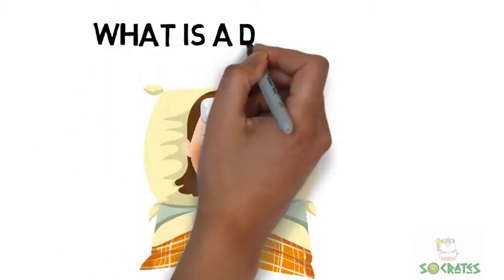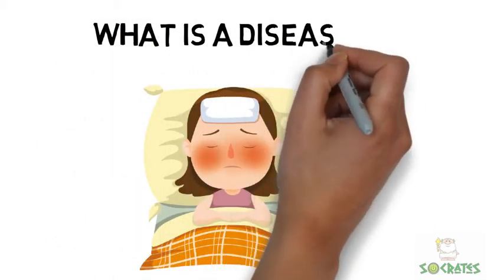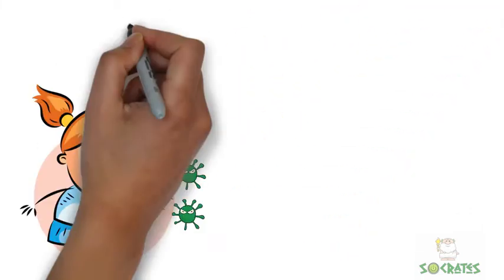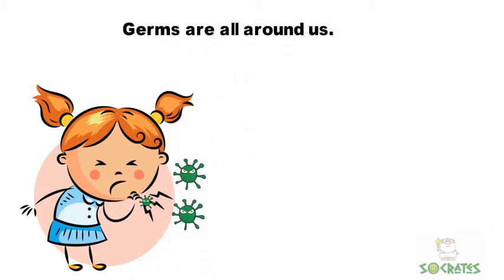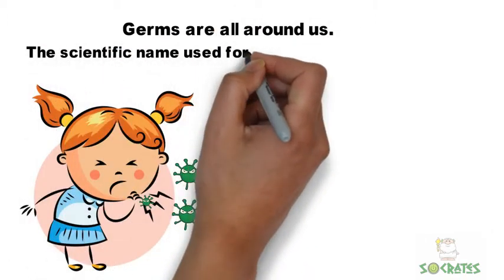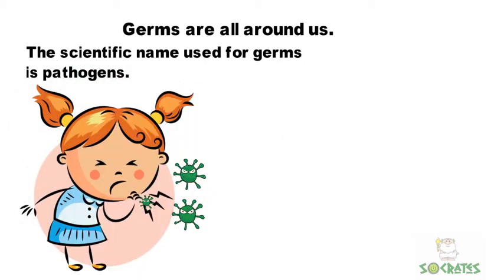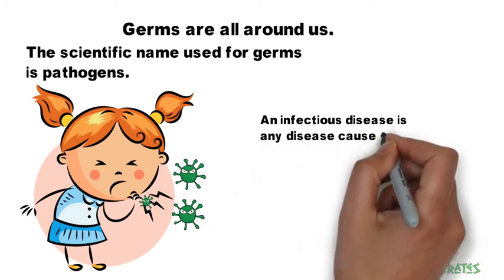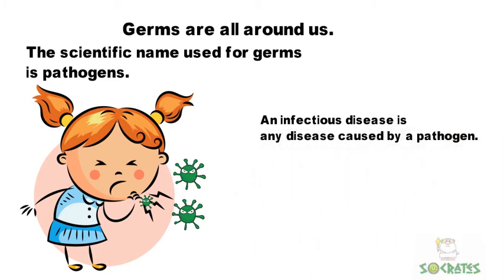What is a disease? Germs are all around us. The scientific name used for germs is pathogens. An infectious disease is any disease caused by a pathogen.